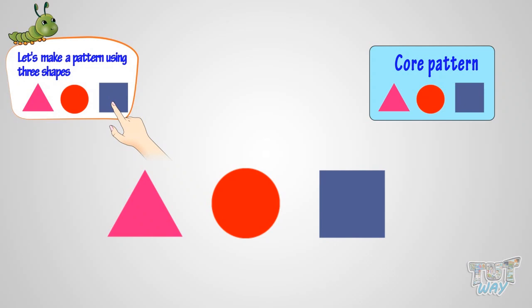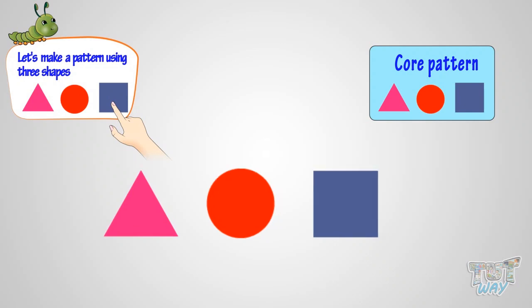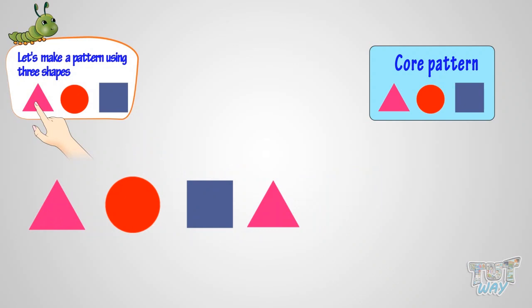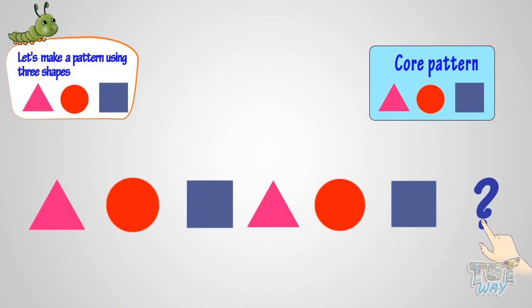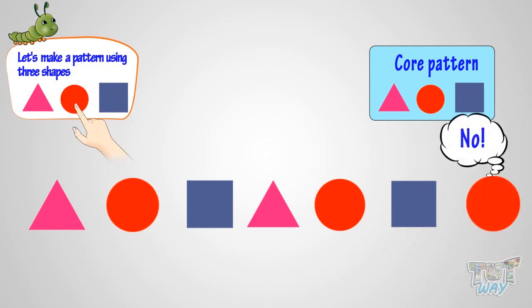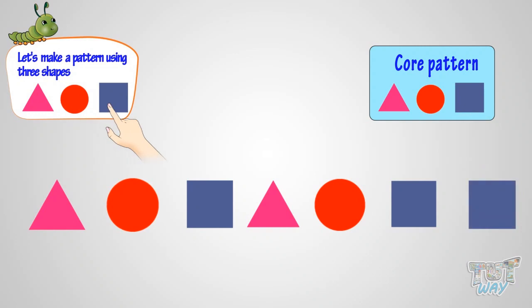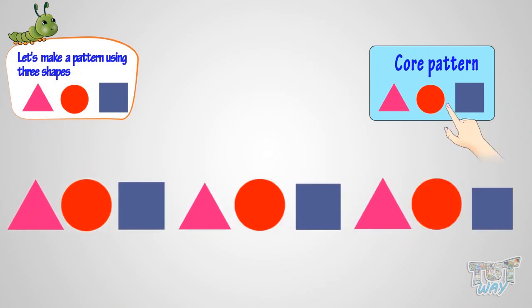Or the pattern that we will be repeating. Now let's continue making it. What will come next? We will have to use all three shapes. Now we will use again the first shape we used, so take a triangle. Now a circle. Now a square. Looking nice! Now what will come next? Triangle! This is right. As we have to repeat the core pattern after a square, and our core pattern starts with a triangle.